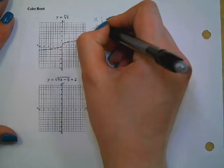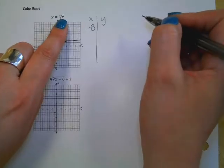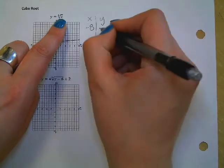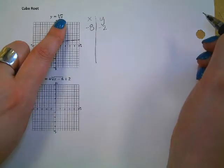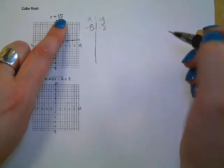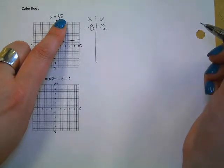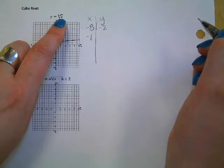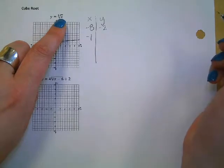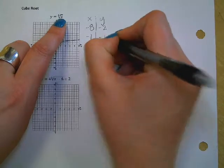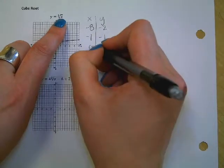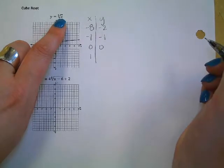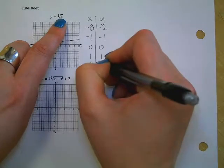So if you plug in negative 8 for x, then you're taking the cube root of negative 8. So you're saying what times itself three times would get you to a negative 8, and the answer to that is negative 2. We're going to plug in negative 8 because it's easy to cube root. We're not going to plug in negative 7 because when you cube root that, you get a decimal. The next one we're going to cube root is negative 1, the answer is negative 1. Then we're going to do the cube root of 0 which is 0, the cube root of 1 which is 1, and then the cube root of 8 which is 2.